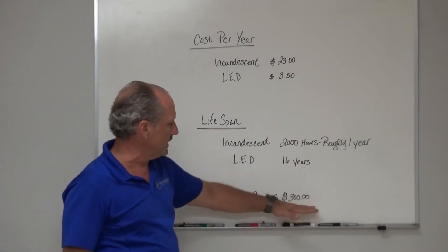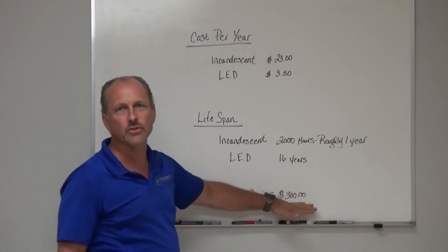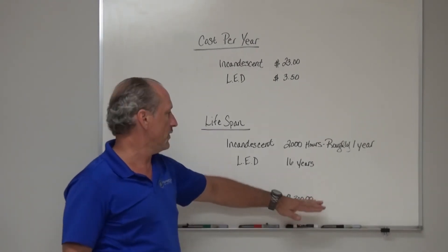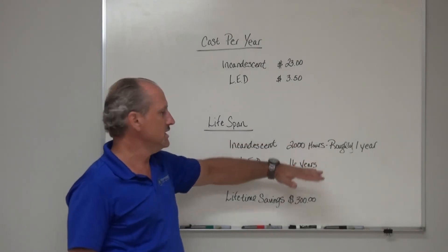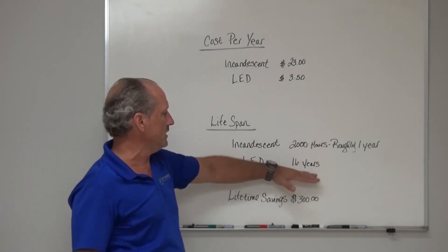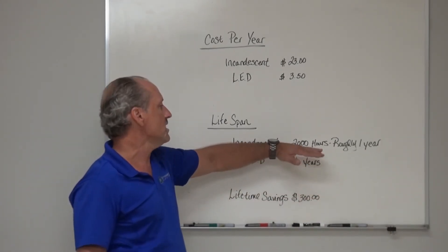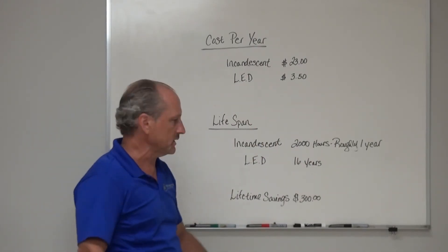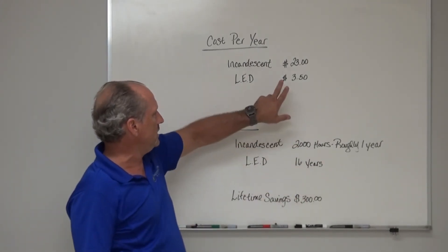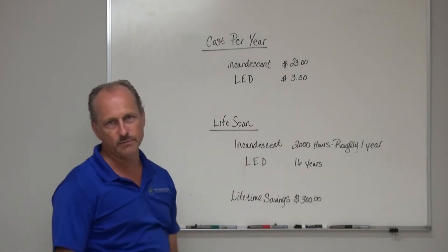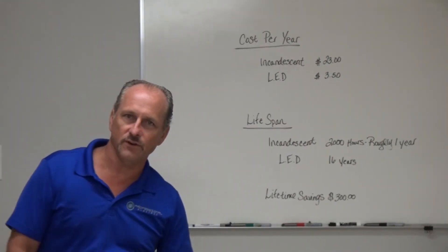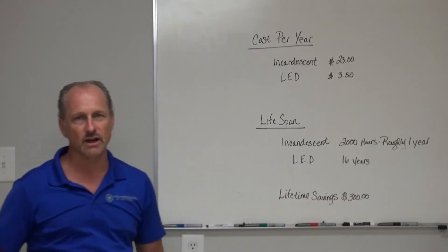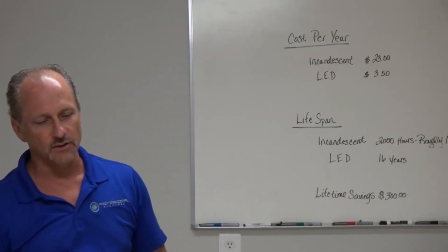Over the lifetime of that bulb, you will save yourself about three hundred dollars in energy costs — and that's not factoring in reduced maintenance. If you replace the incandescent bulb every year for sixteen years, you're in for another forty dollars or so. The LED trim installed by Professional Electric is forty-eight fifty, so it's about a two-year turnaround, and after that it begins to pay for itself.